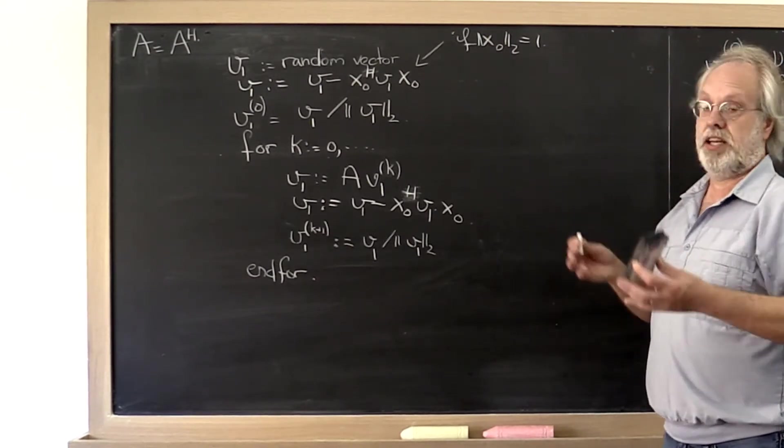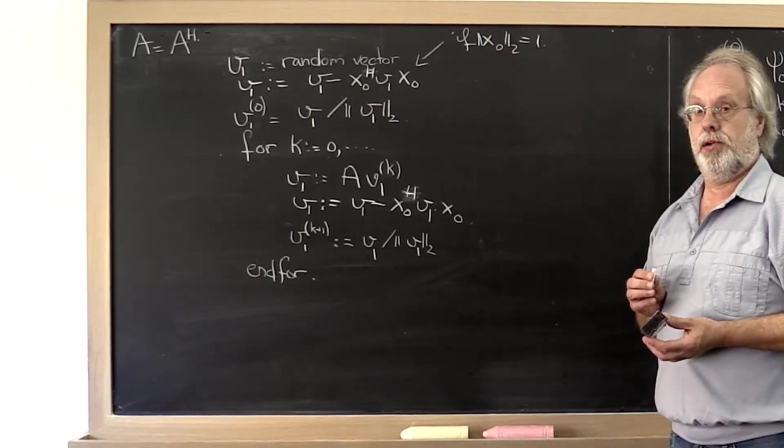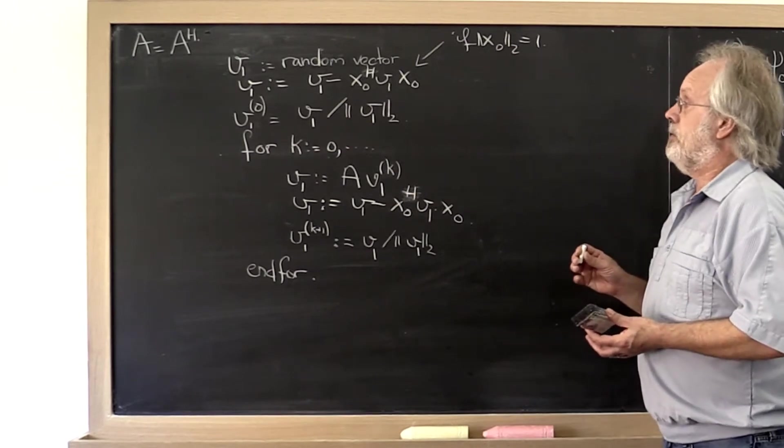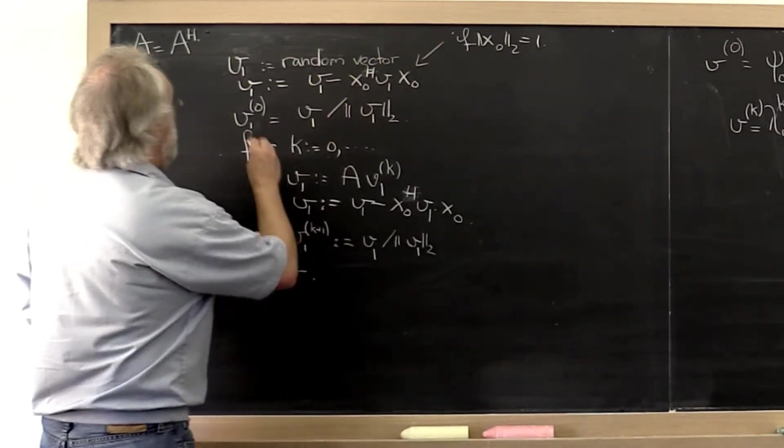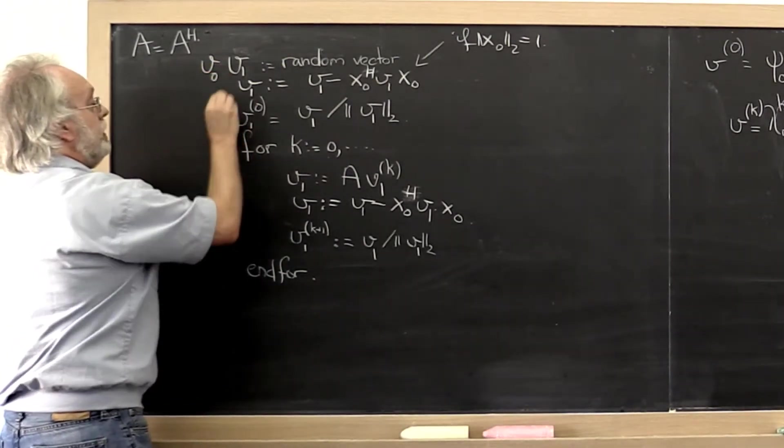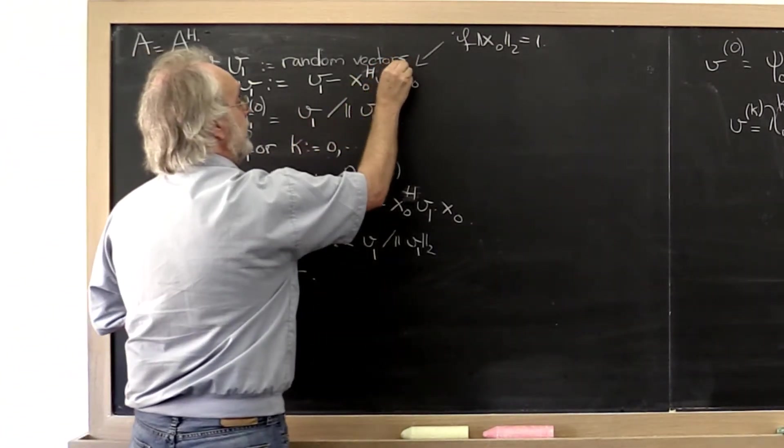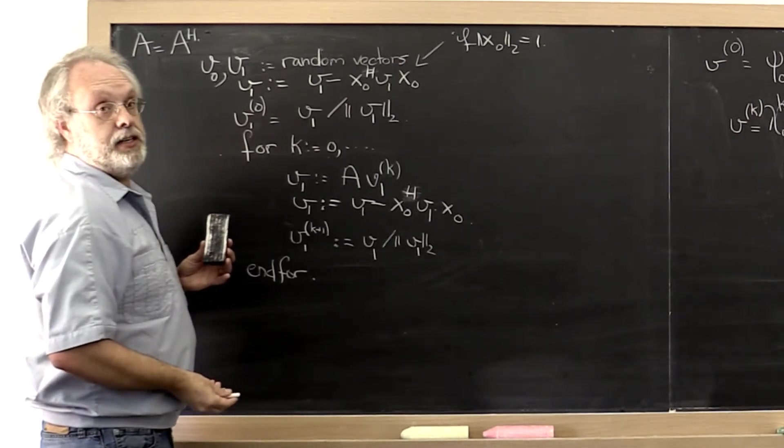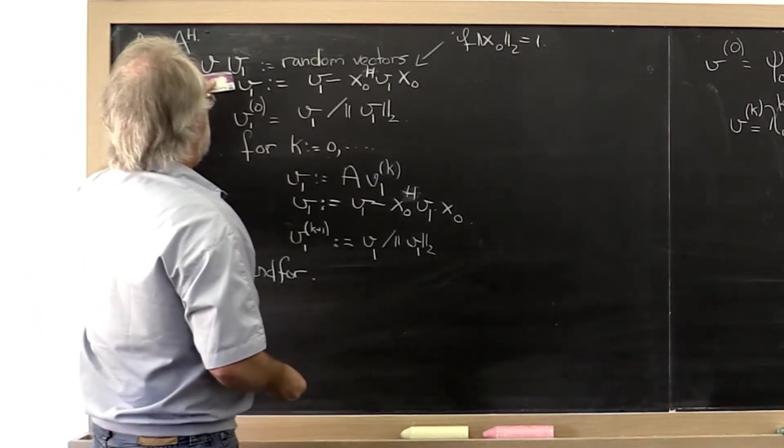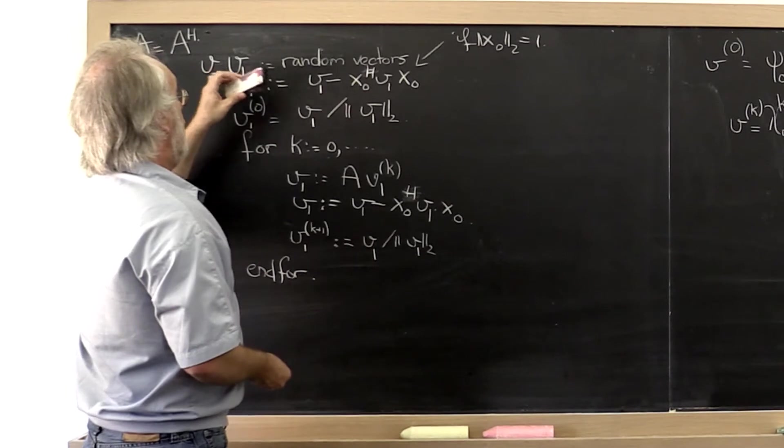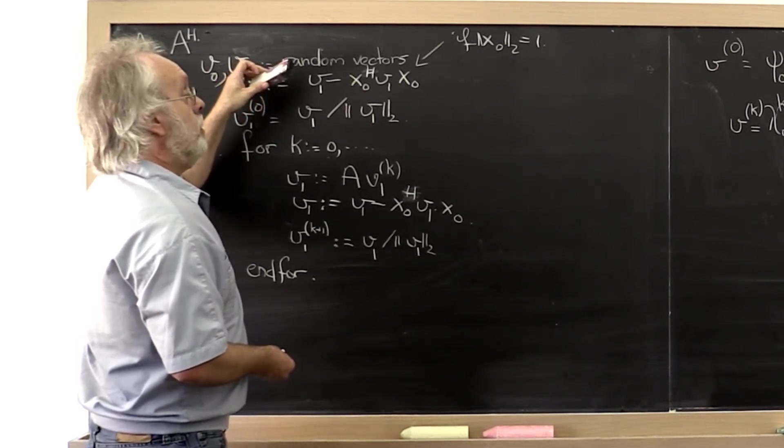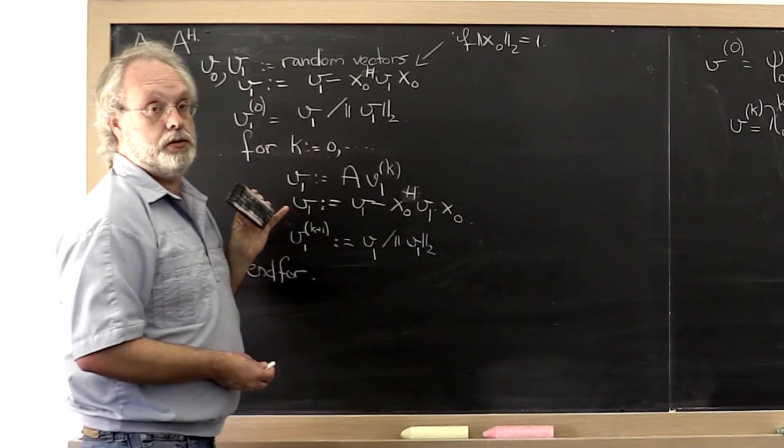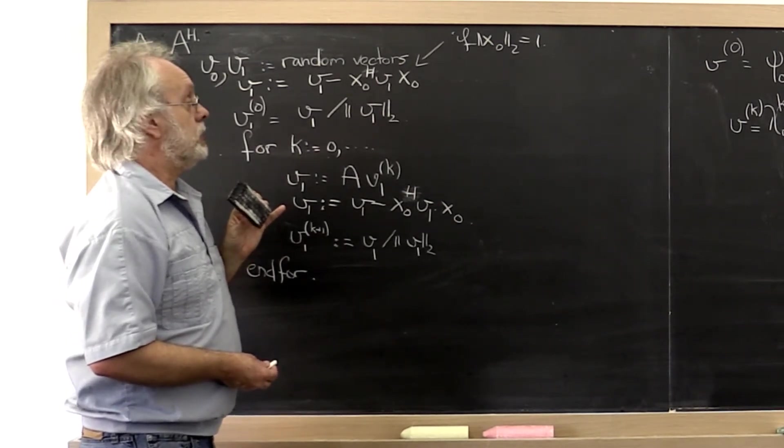We could do that simultaneously. Let's see what happens, what I mean by that. We could say let's pick v0 and v1 to be random vectors. Then let's make v0 of length 1 and let's make v1 of length 1 but orthogonal to v0.